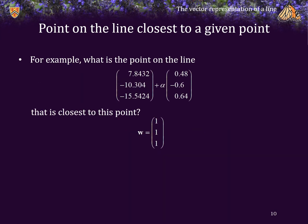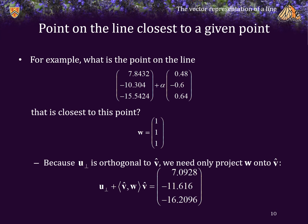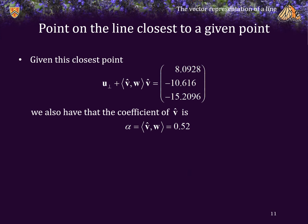For example, what is the point on this line, which we calculated previously, that is closest to the point (1,1,1)? Because u_perp is already orthogonal to v̂, we need only project w onto v̂ and add that onto the vector u_perp, which gives us this point here. This is the point on the previous line that is closest to the point (1,1,1). Given that this point is closest to the vector w, the coefficient of v̂ is 0.52. Consequently, if we are using meters, this closest point on the line is 0.52 meters from the point u_perp.